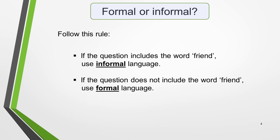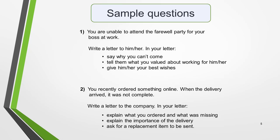Your first task is to decide if the question requires you to write a formal letter or an informal letter. If you get this wrong, you'll get a low score for task achievement. The two types of letter have a very different tone and style, and the language you use will also vary. It's very simple to tell the difference. Follow this rule: if the question includes the word 'friend,' use informal language. If the question does not include the word 'friend,' use formal language.